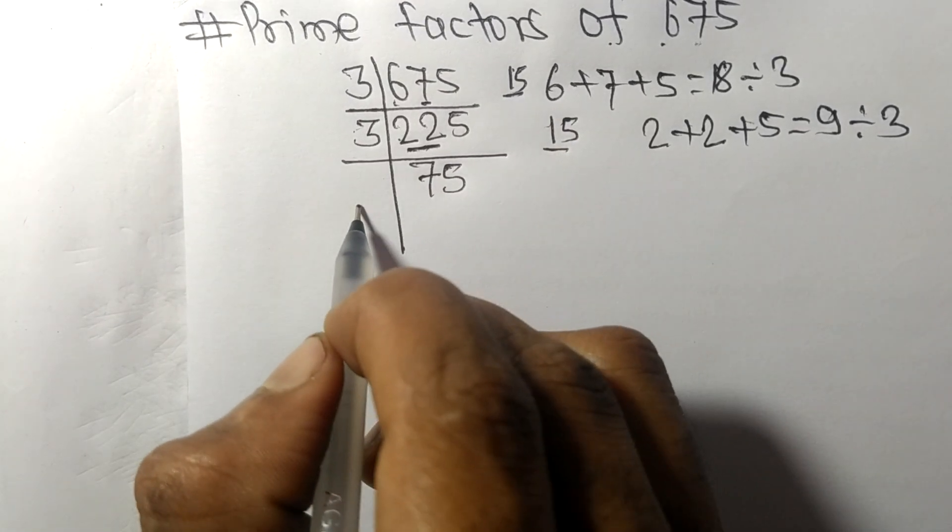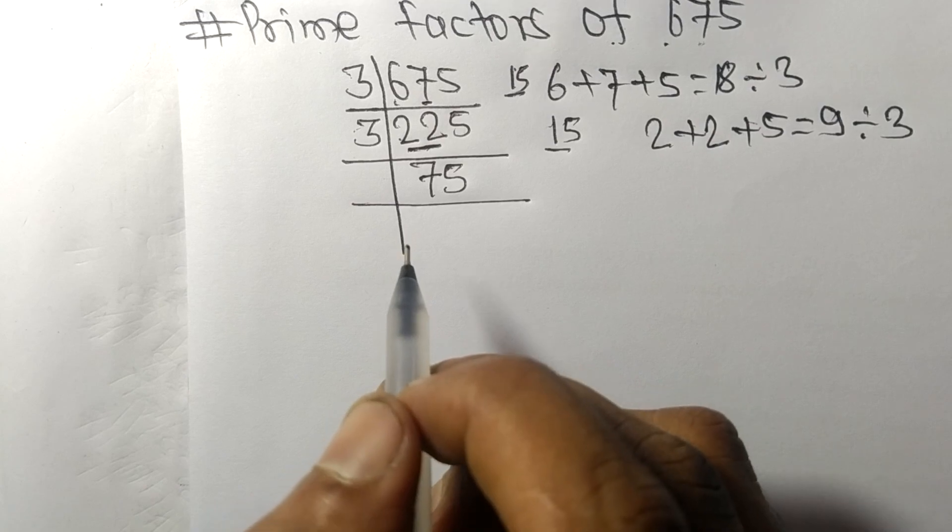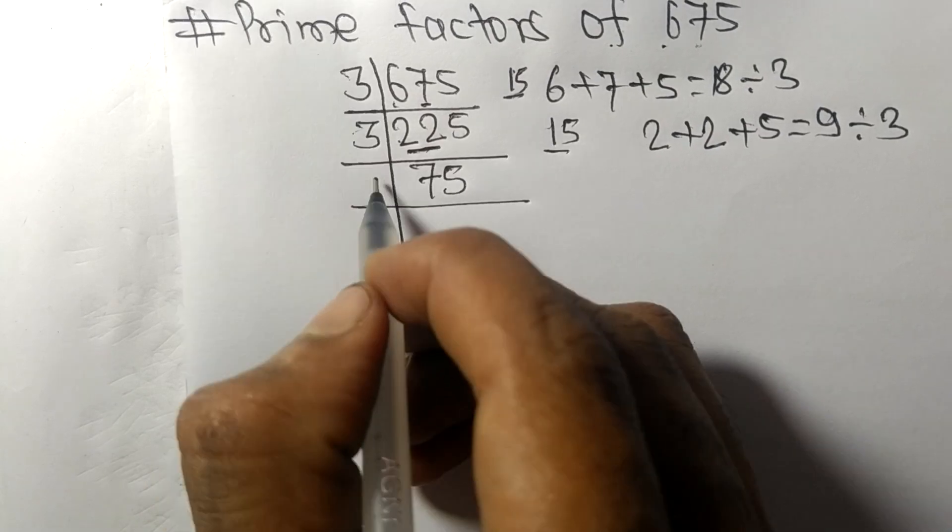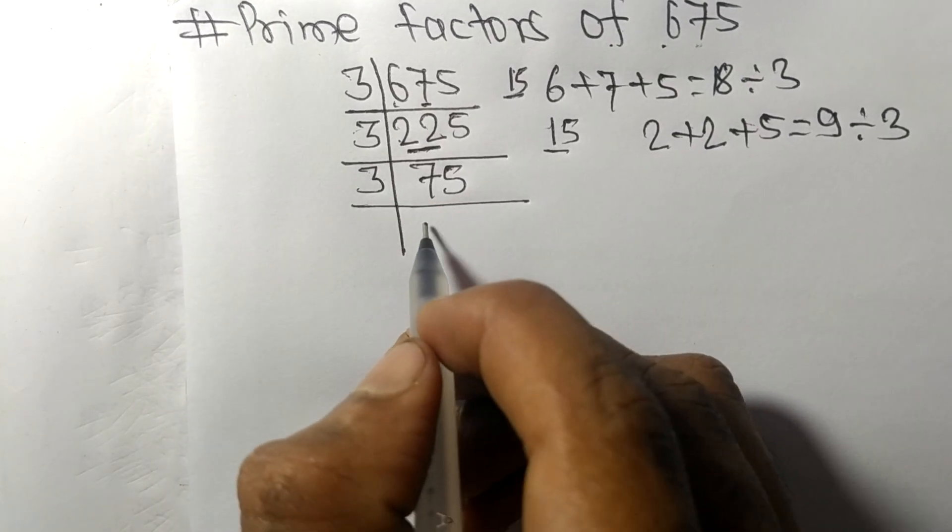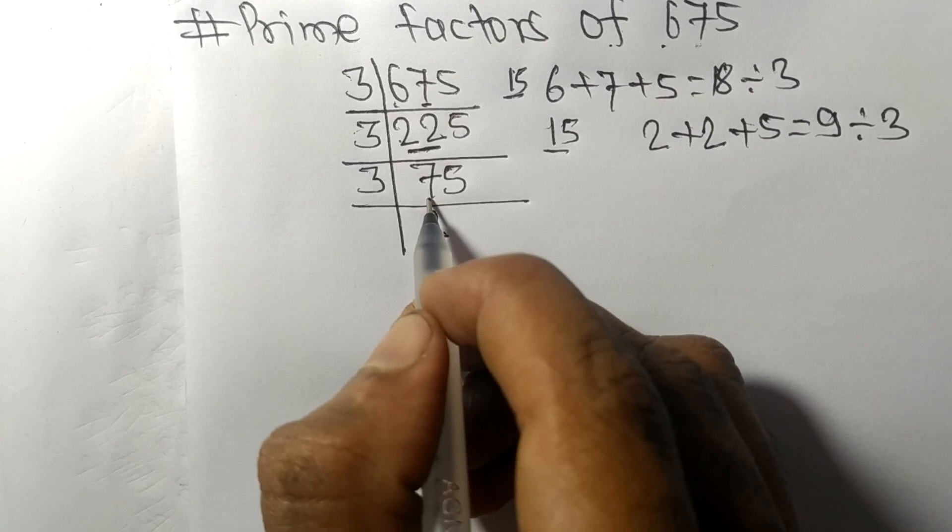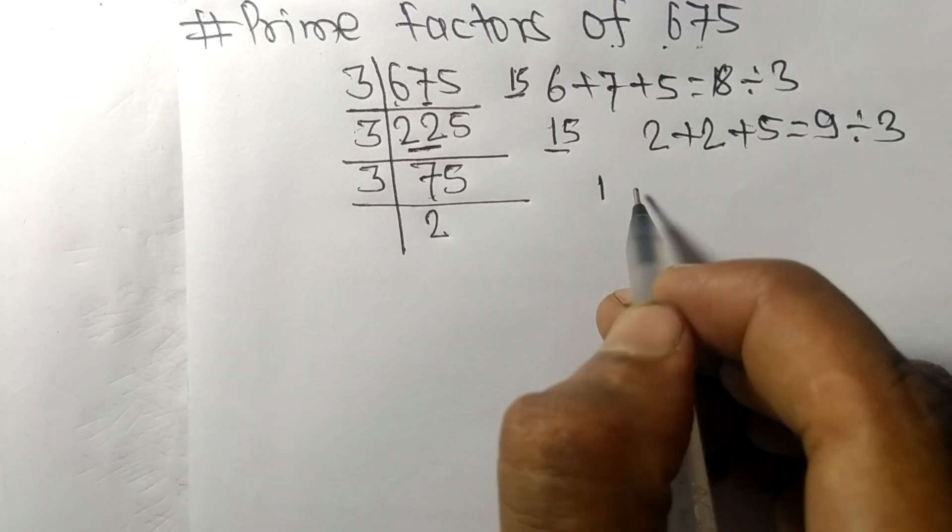Now we have 75, which is again divisible by 3. 3 times 2 is 6, remainder 1. This 5 makes 15. 3 times 5 is 15. We get 25.